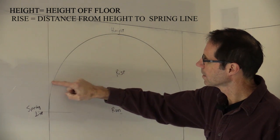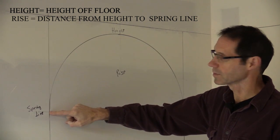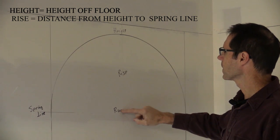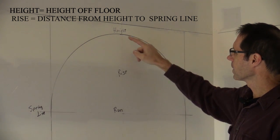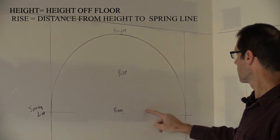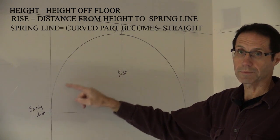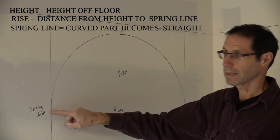Where it becomes straight again. So that is called the rise. Where the rise hits this outside edge here is called the spring line. That's where the curved part becomes straight - that's your spring line.